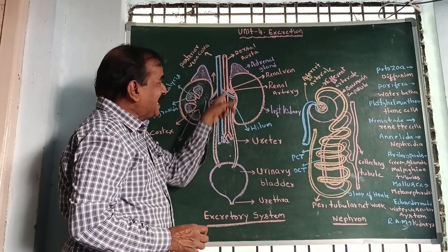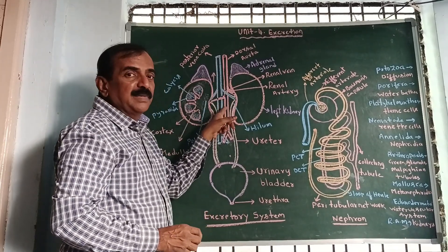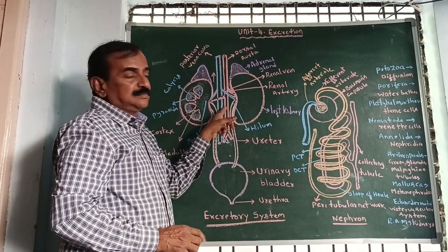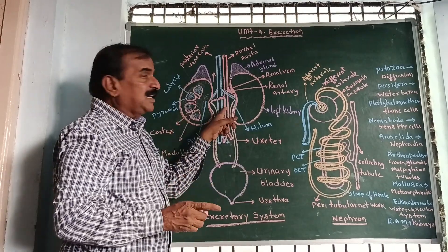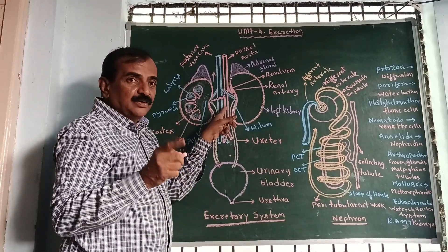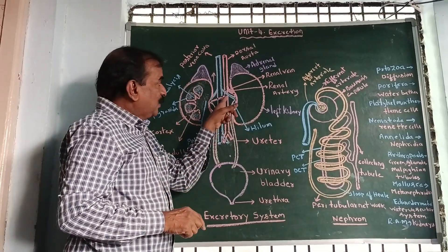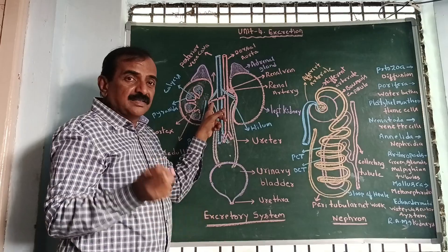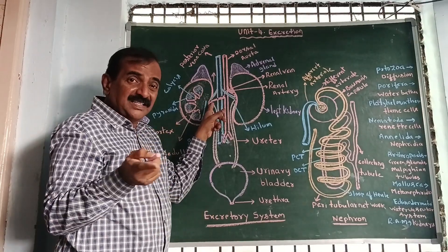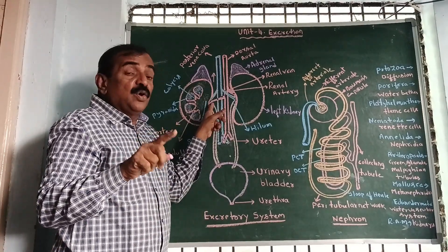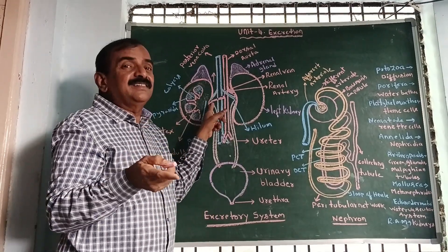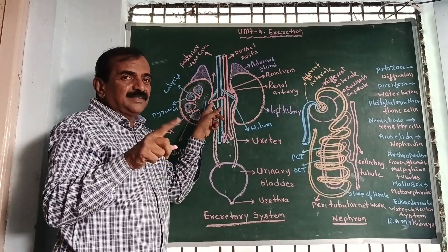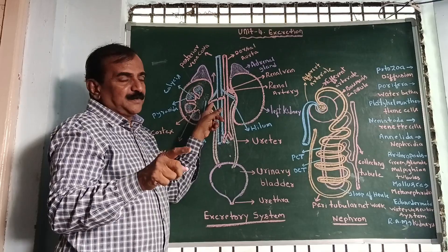Again, you can see there is a red colored blood vessel, and that is called the dorsal aorta, which carries oxygenated blood loaded with nitrogenous waste products.